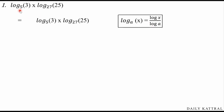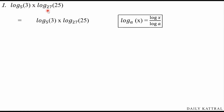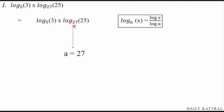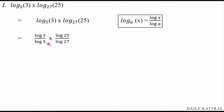If you look at log base 5 and log base 27, we will use log x divided by log a. In the first term, a is 5 and x is 3. In the second term, a is 27 and x is 25. Now we apply the formula: log 3 divided by log 5, into log 25 divided by log 27.